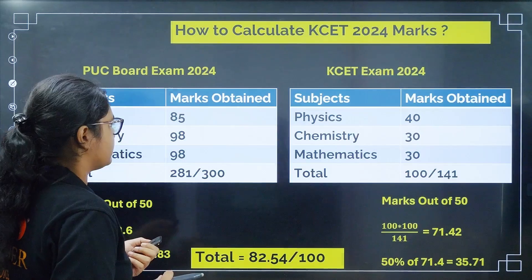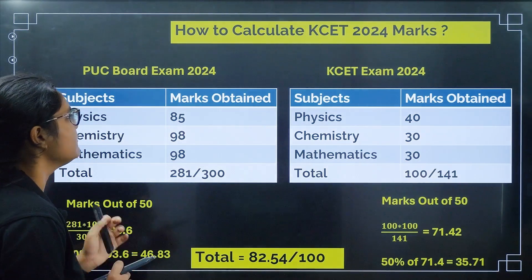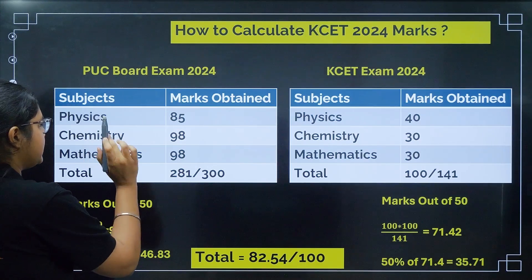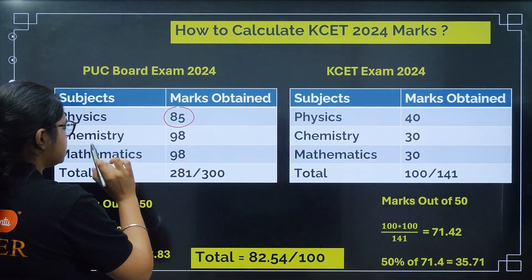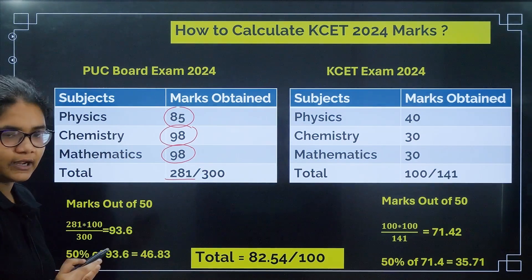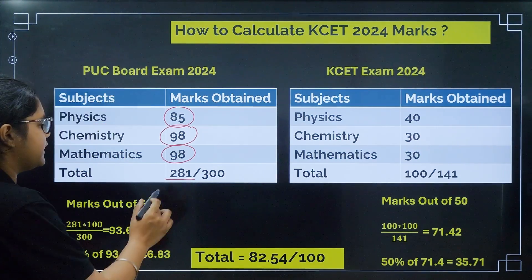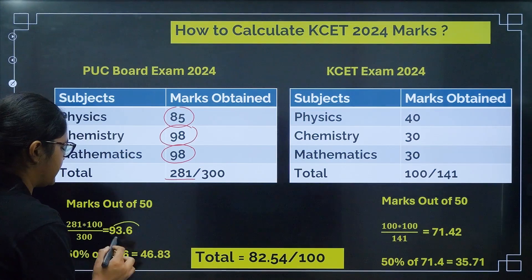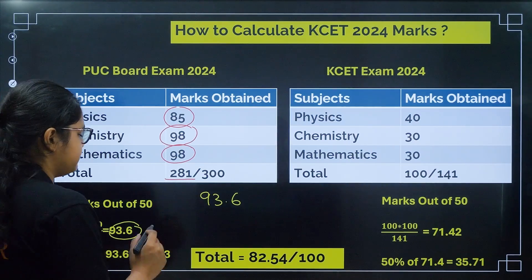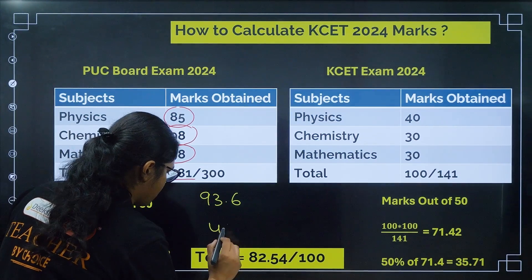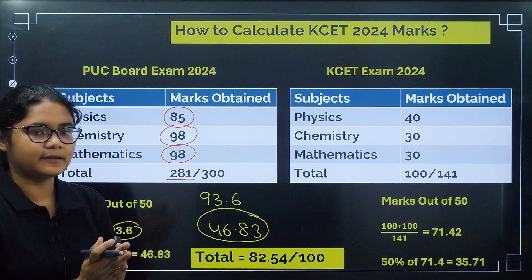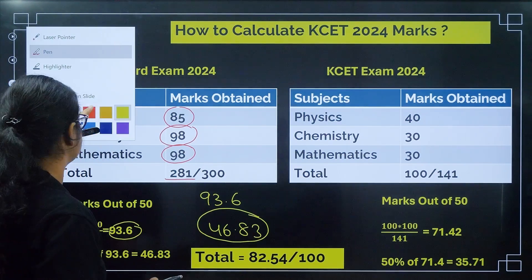Let us see how it is calculated with an example. For the PU board, suppose a student has secured 85 marks in Physics, 98 in Chemistry, and 98 in Mathematics, giving a total of 281 out of 300. The percentage comes to 281 ÷ 300 × 100 = 93.6%. Now taking 50% of this by dividing by 2, we get 46.83. This is the weightage from the PU board qualifying examination.